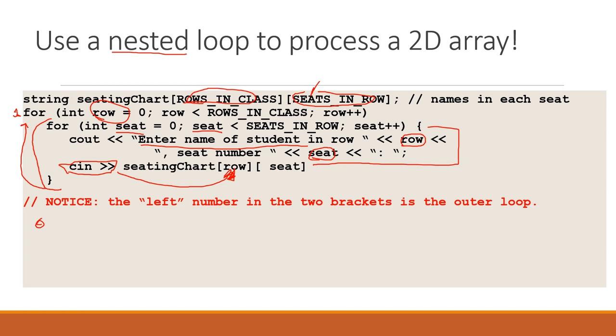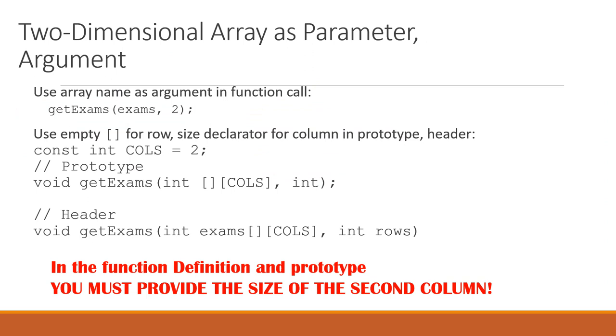If we are going to pass a two-dimensional array, let's say this exams array, we're going to call a function called getExams. We have to pass it the number of rows. Here's our prototype - this is what goes in the .h file. You'll notice here I'm declaring an array. I should have had an array name there, that's a minus five for this lecture. I don't have to tell it how many rows there are, but I do have to tell it how many columns there are.